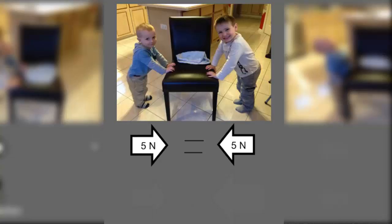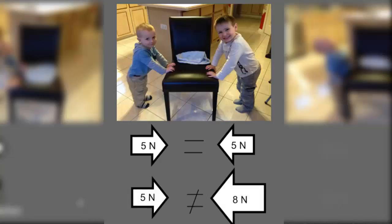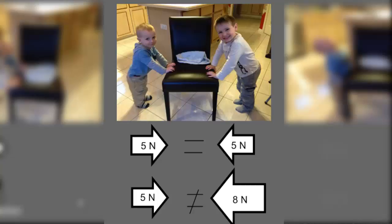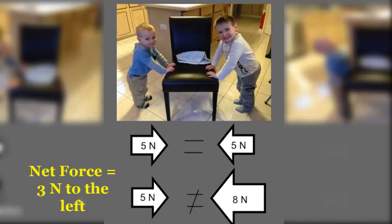When we talk about Newton's third law, you're going to hear about balanced and unbalanced forces again. Take note that both boys are pushing on the same object — the chair — causing the net force to be zero and the object will not move. In a different situation, the smaller boy could push with five newtons towards the right while the larger boy pushes with eight newtons towards the left. In this case we have unbalanced forces causing the object to move towards the left, and our net force would be three newtons towards the left.